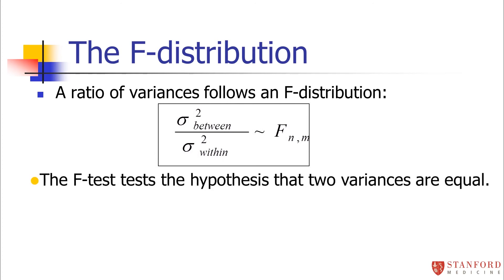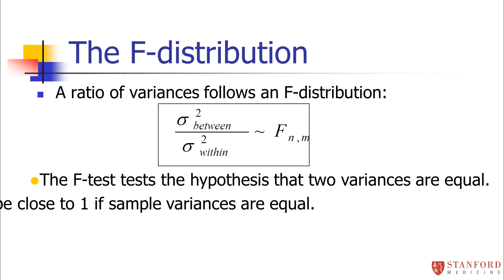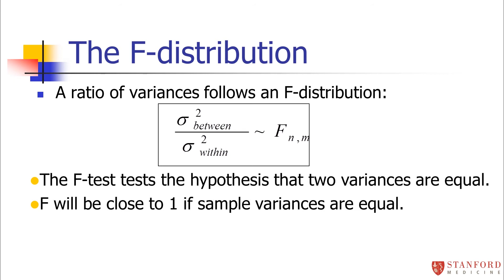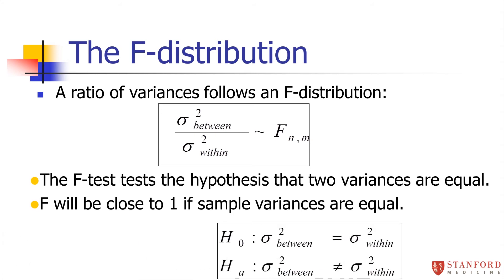The F test tests the hypothesis that those two variances are equal. If the variance between groups equals the variance within groups, that suggests the groups do not differ in their means. If F is close to 1, there's no difference in means across the groups. However, if F is very far from 1, that suggests more difference between groups than within groups — in other words, a difference in means across the groups. That's the general idea of an ANOVA; the detailed mechanics are available as optional material.